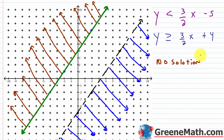We found that out right away: same slope, different y-intercepts. We investigated further and looked at the symbols — less than versus greater than or equal to — and knew this scenario would result in no overlap and therefore no solution.